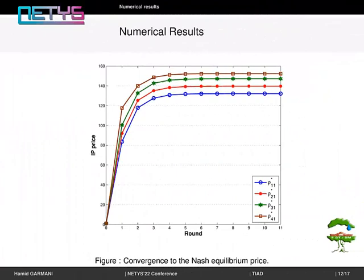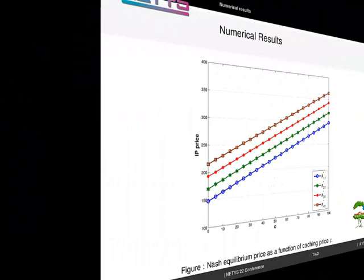Numerical results. This figure shows the curve of convergence to the Nash equilibrium price. We note that the best response algorithm converges to the unique Nash equilibrium price. In addition, the speed of convergence is relatively high.